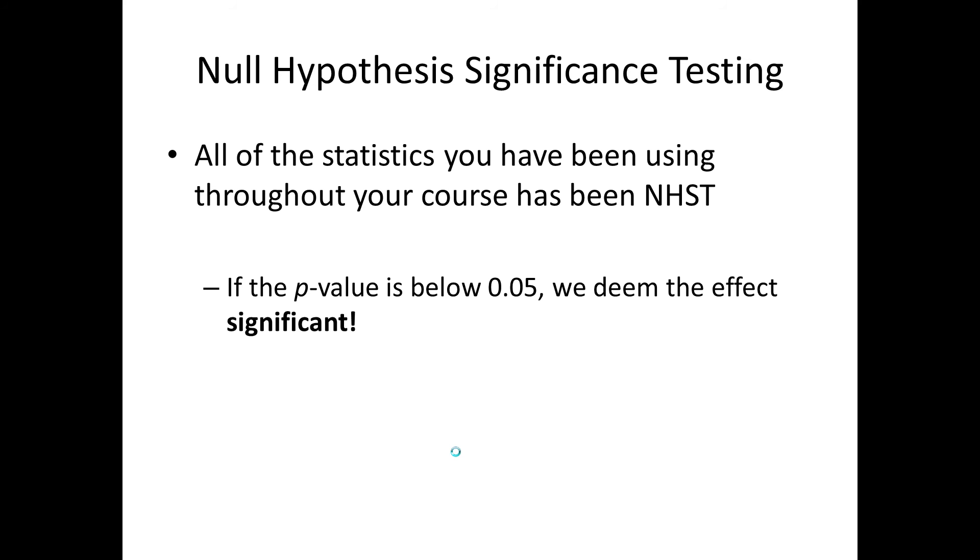If this p-value is below 0.05 we deem the effect significant. So in psychology we use a threshold of 0.05. If that p-value that you've obtained in your test is below 0.05 you can declare that there is a significant difference in your data. But what does this actually mean?